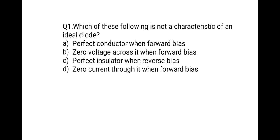The first question is: which of the following is not a characteristic of an ideal diode? Option one: perfect conductor when forward bias. Option two: zero voltage across it when forward bias. Option three: perfect insulator when reverse bias. Option four: zero current through it when forward bias.